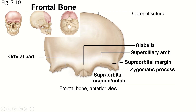So that's your supraorbital foramen or notch — supra meaning above. Above the supraorbital margin there's a little ridge called the superciliary arch. Cilia meaning hair, super meaning on or above. That's where your eyebrows go. And then there's a little spot — usually an indentation — between the two superciliary arches, and that is called the glabella. That's that little indentation right between your eyebrows. And then we have the zygomatic process, which we've already talked about, and that goes to the zygomatic bone.